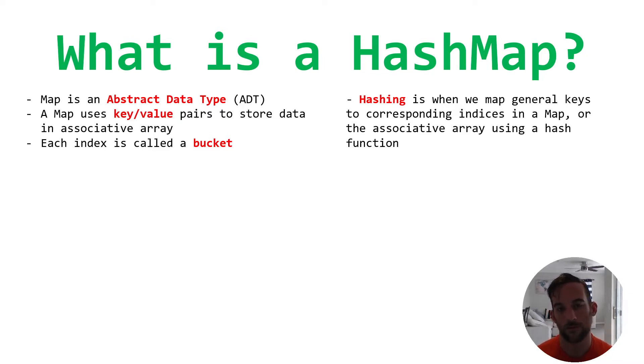And HashMap is one of those implementations of a map. Now, a map by itself just uses key value pairs to store data in an associative array. So in the background of it, it's just an array.